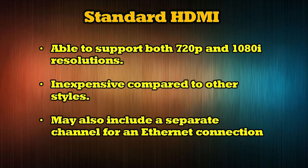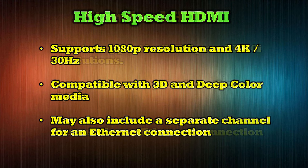A standard HDMI cable is the oldest connection type still in use today. It supports 720p and 1080i content and is available in a wide variety of cable lengths. These cables are inexpensive compared to newer options and work well for connecting older media devices to lower resolution displays. Some versions of standard HDMI cables also include a separate channel to support an ethernet connection — look for a special label on the cable if you need this functionality.